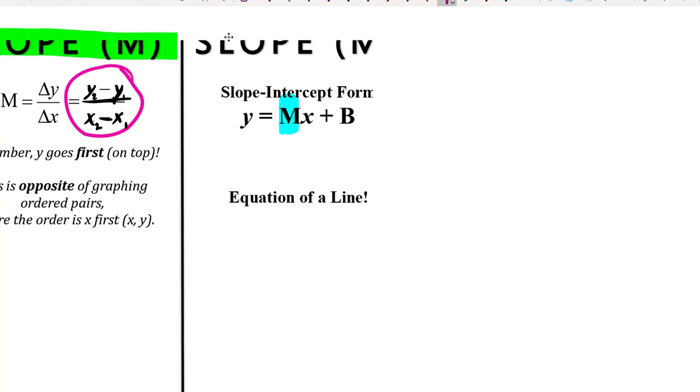Whatever the coefficient is for the x, that is your slope. And I'll go ahead and tell you too, the b variable is representing the y-intercept, the point at which that line is crossing the y-axis.